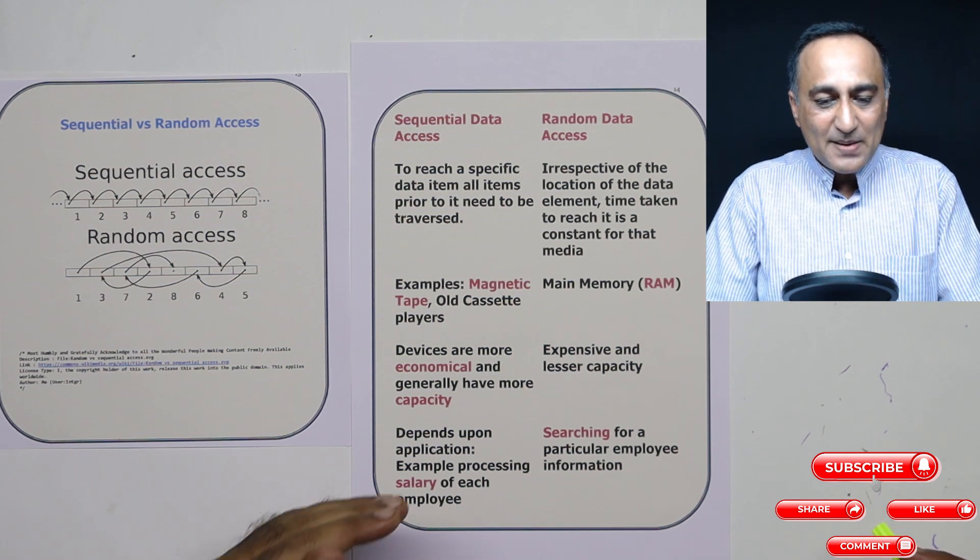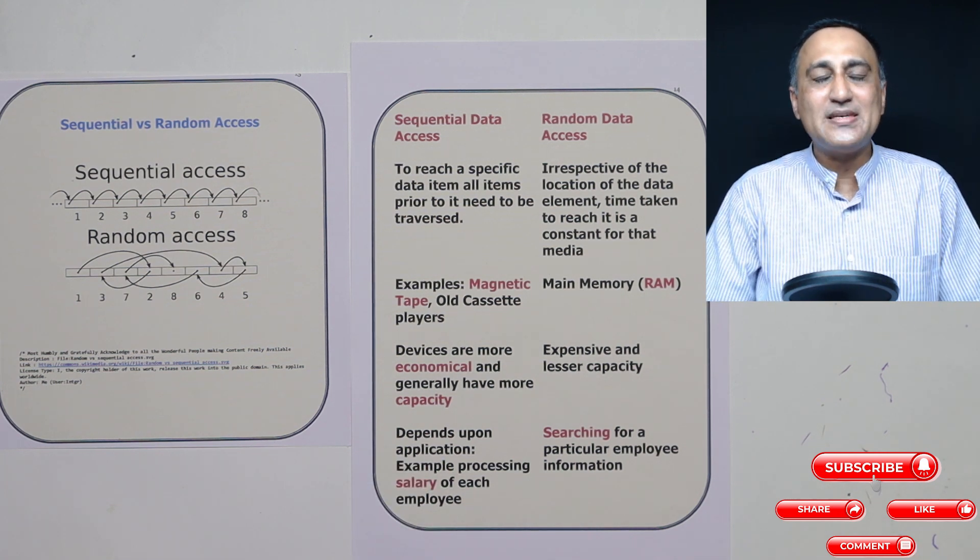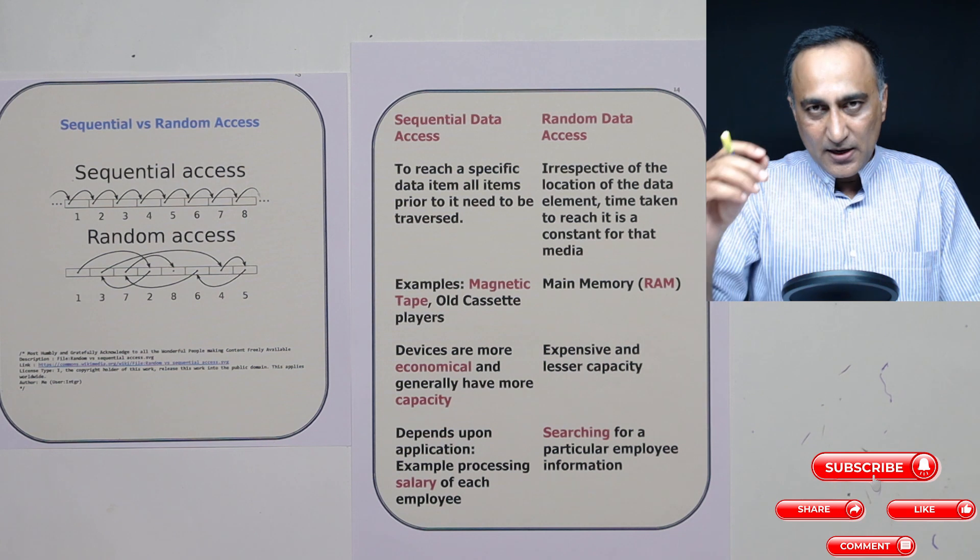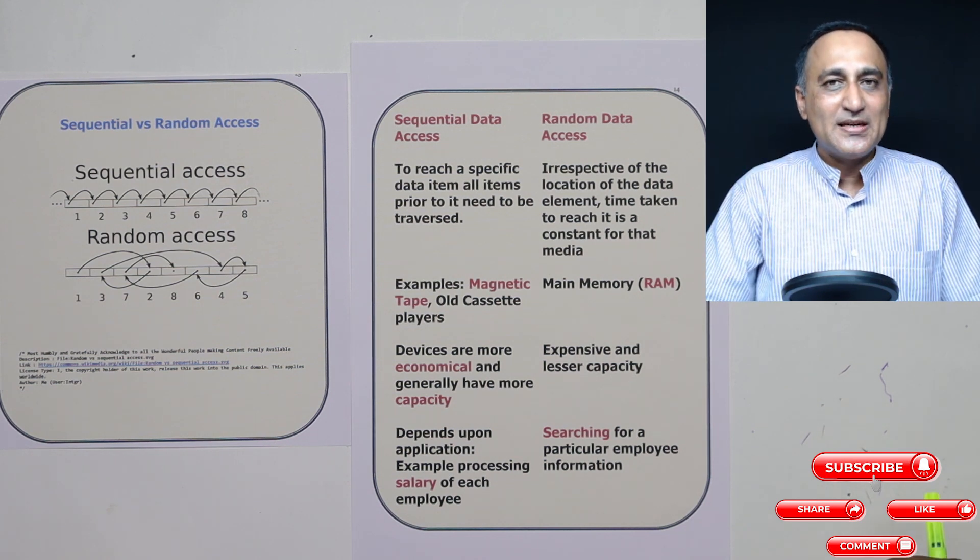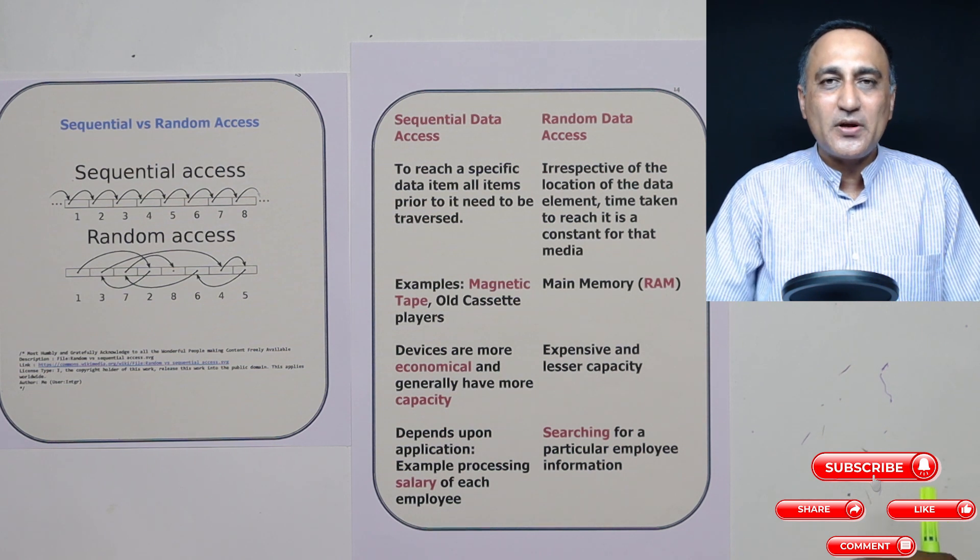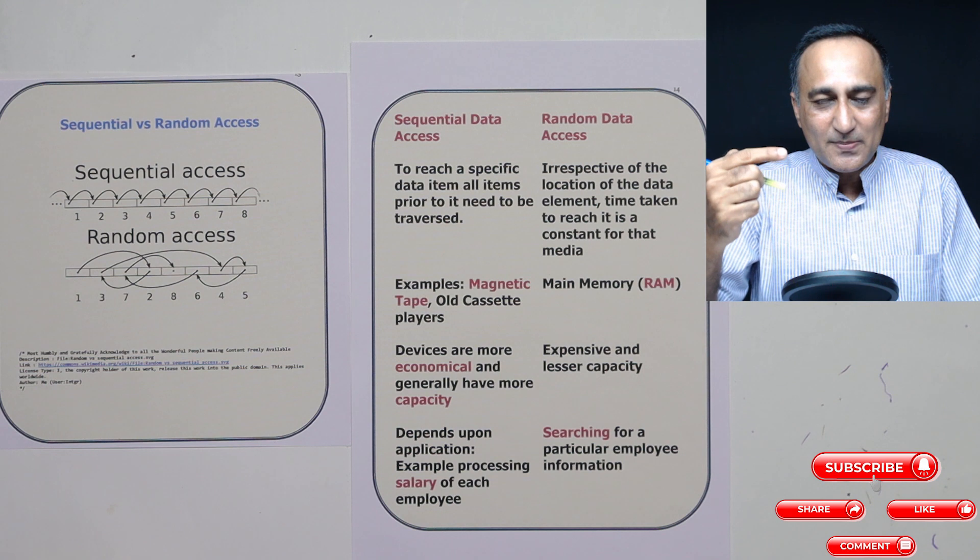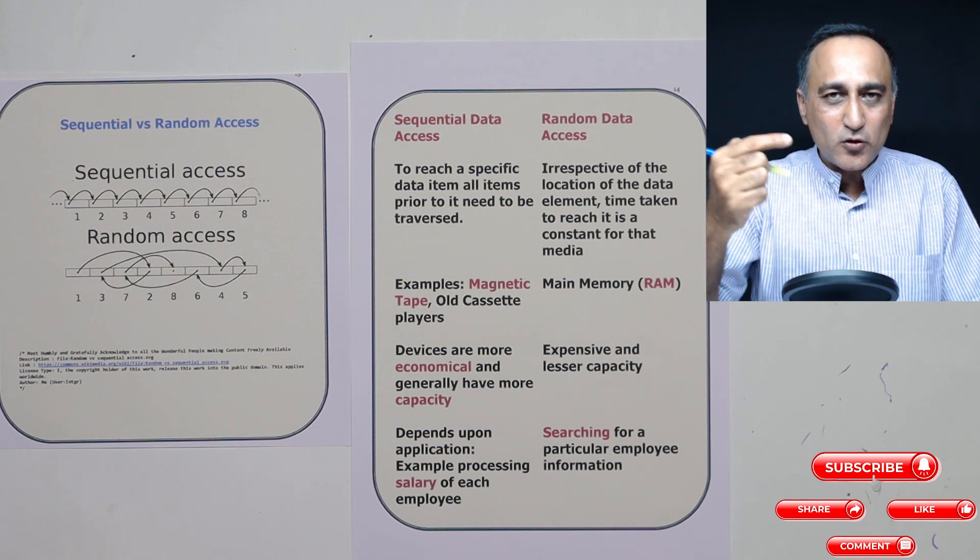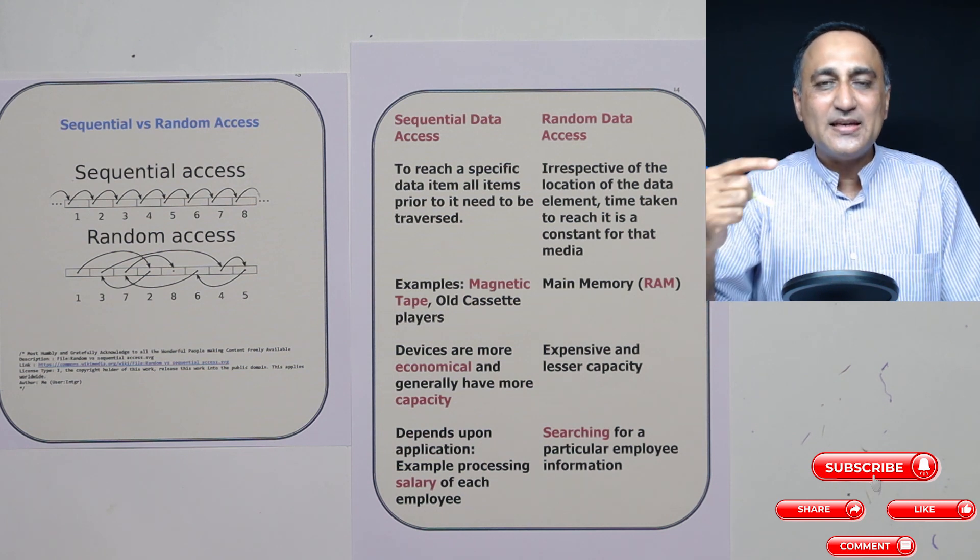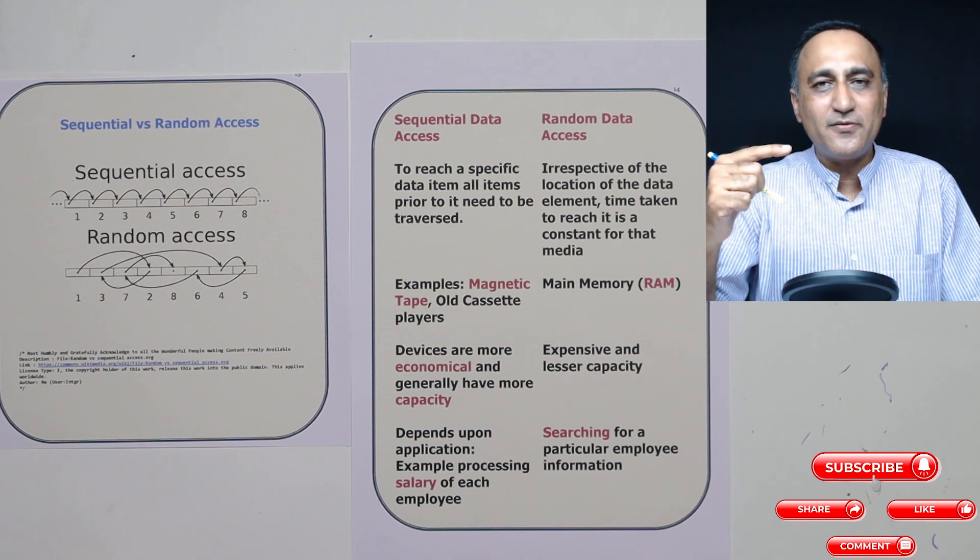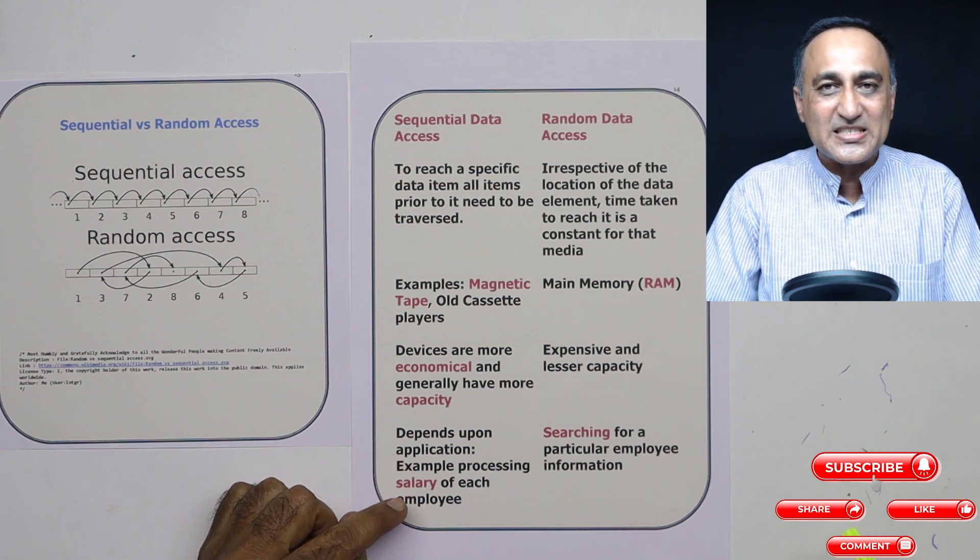Now an example of where you will use a sequential data access is let's say I have 50,000 employees in my factory and for each of those 50,000 employees I am generating the salary. Since I am generating the salary for each employee, I will read employee number one based on his basic I'll calculate the total salary. I'll go to second employee, do the same thing. Third employee, do the same thing. This will continue till employee number 50,000. So here sequential access is more sensible.